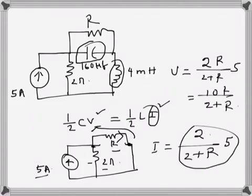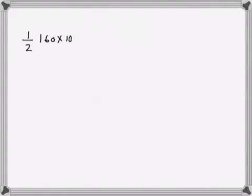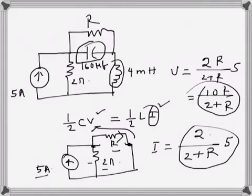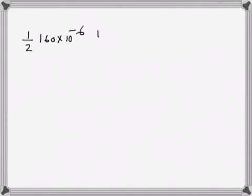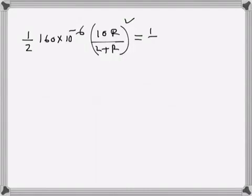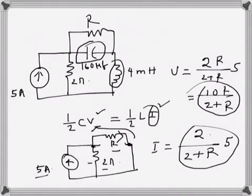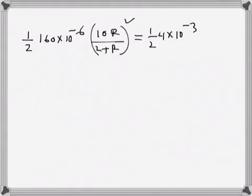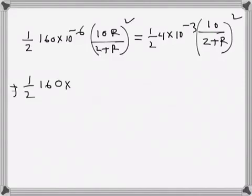So the current I is 10 over 2 plus R, and the voltage V is 10R over 2 plus R. Now setting half C — which is 160 times 10 to the power minus 6 farads — times V squared equal to half L — which is 10 to the power minus 3 — times I squared: half times 160 times 10 to the minus 6 times (10R over 2 plus R) squared equals half times 10 to the minus 3 times (10 over 2 plus R) squared.